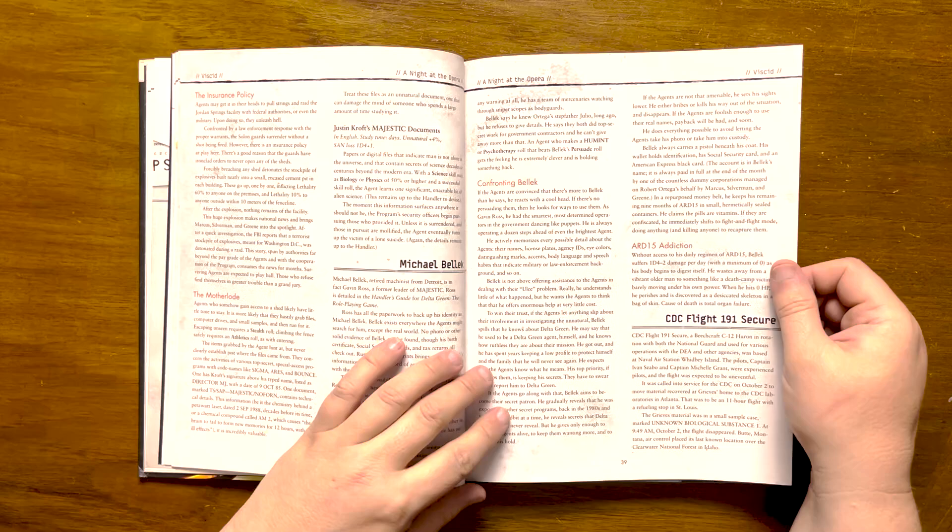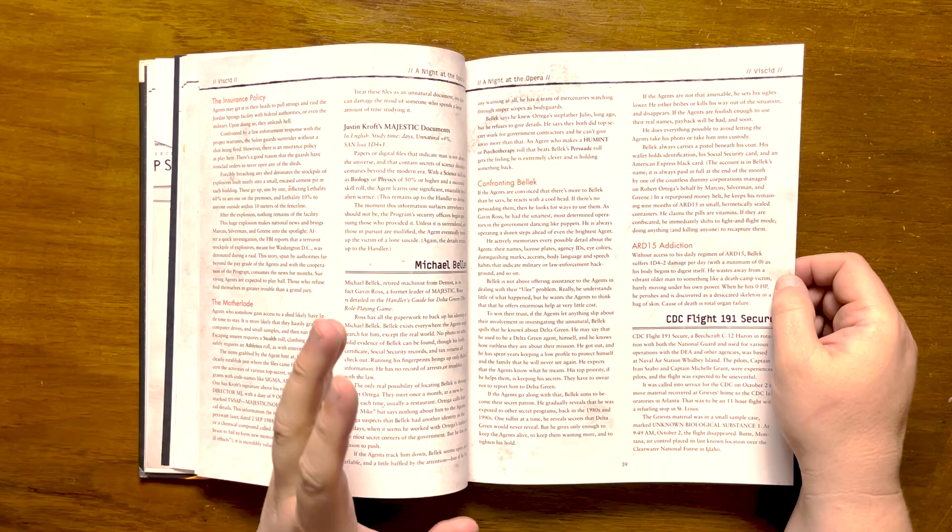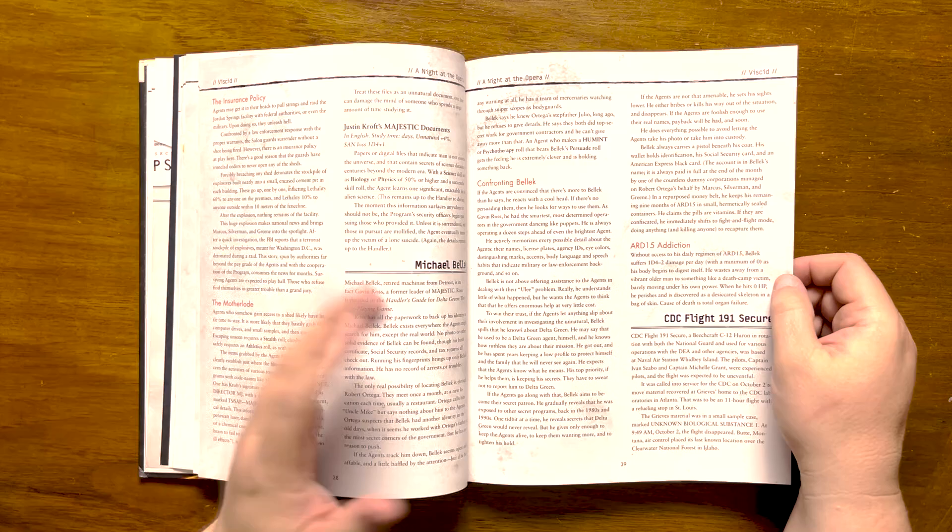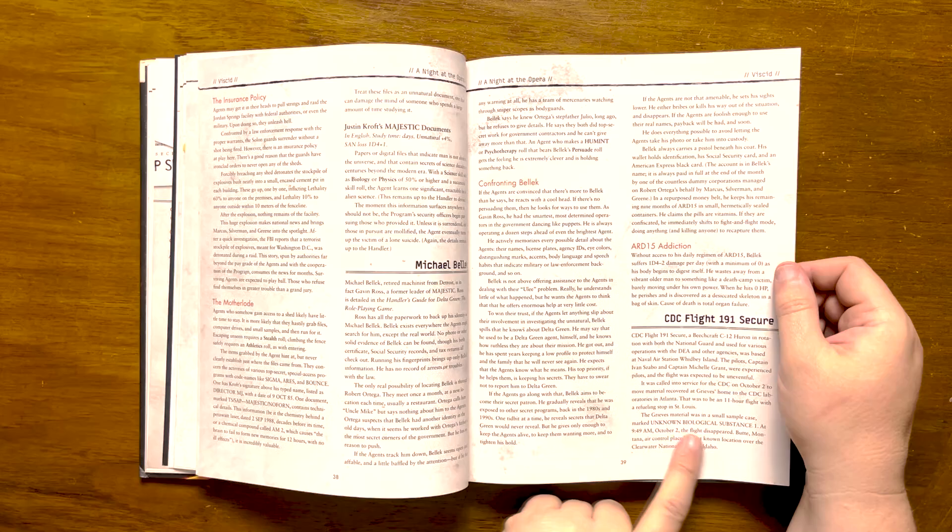It also details what will happen to Bellic should he be starved of ARD-15, which is a gruesome death. Following this, we have information on CDC Flight 191. Investigating this will reveal a smoldering ruin, no bodies, but plenty of blood, and the aforementioned unknown biological substance one case.